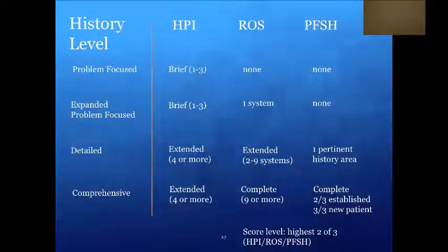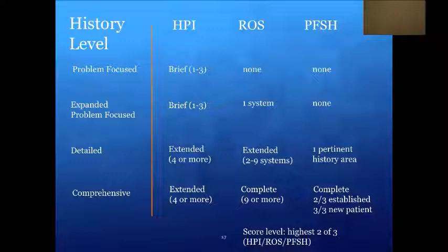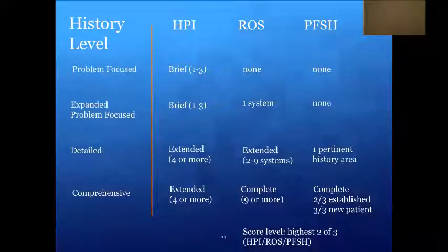To determine the history level, you chart the history of present illness, review of systems, and past family social history. No past family social history is required for problem-focused or expanded problem-focused histories. An extended HPI can result in either a detailed or a comprehensive history level. The history level — problem-focused, expanded problem-focused, detailed, and comprehensive — are all chosen based on the highest level of at least two of the three categories: HPI, ROS, and past family social history.